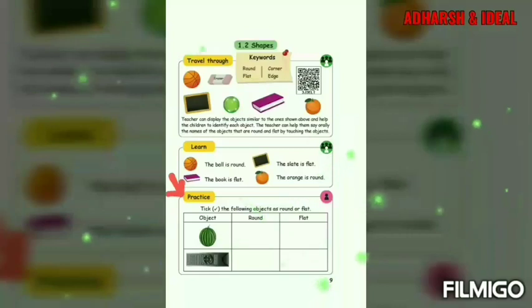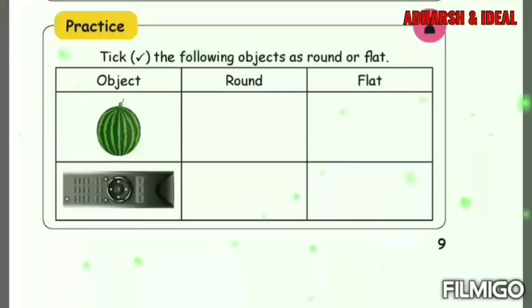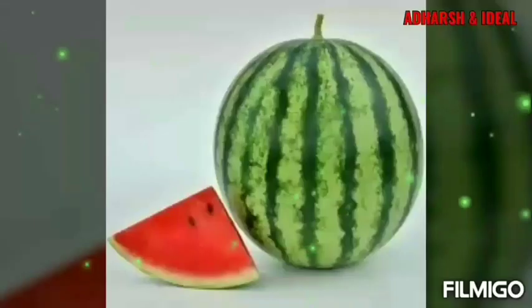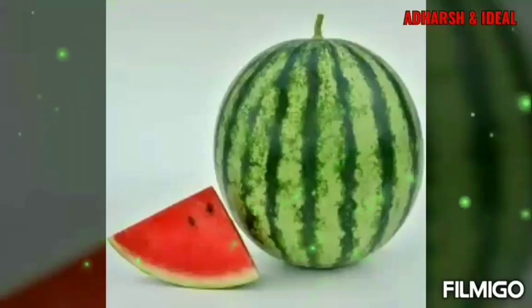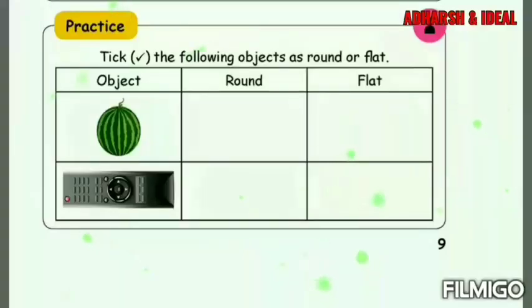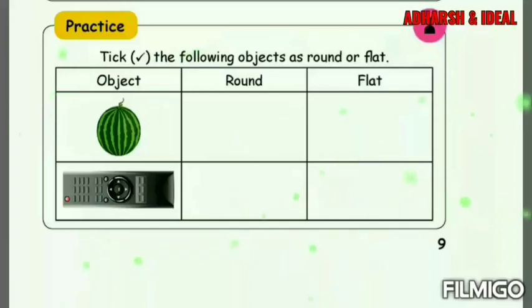See the practice. Think about the following objects as round or flat. First object: watermelon. The surface of a watermelon is curved, so the watermelon is round. The next object is a remote. The surface of a remote is not curved, so the answer is flat.